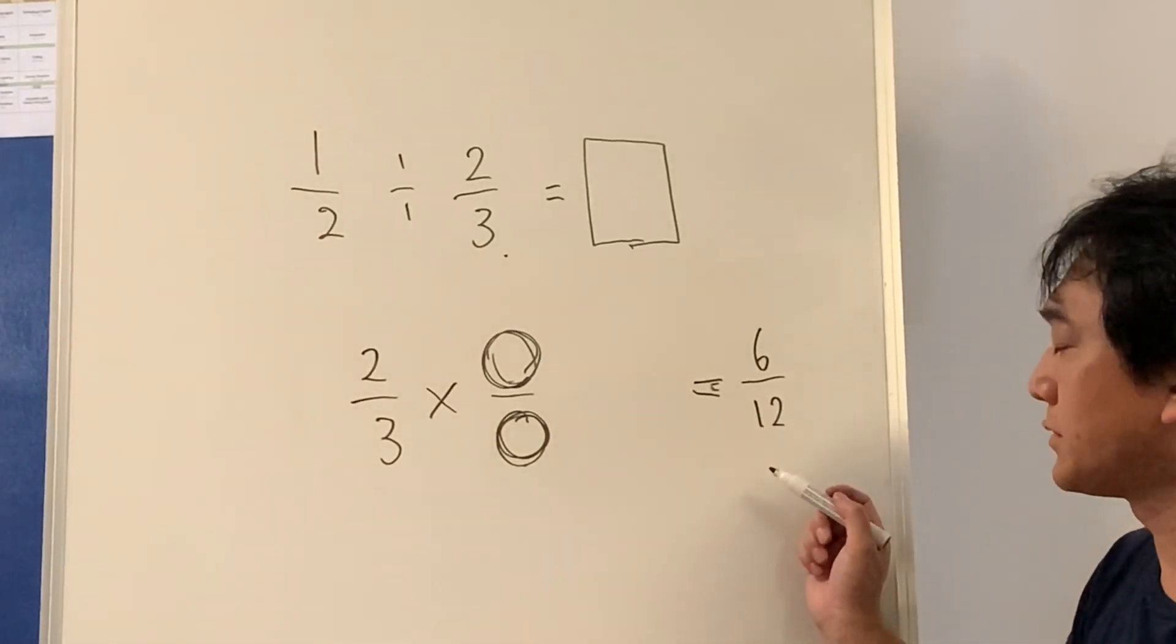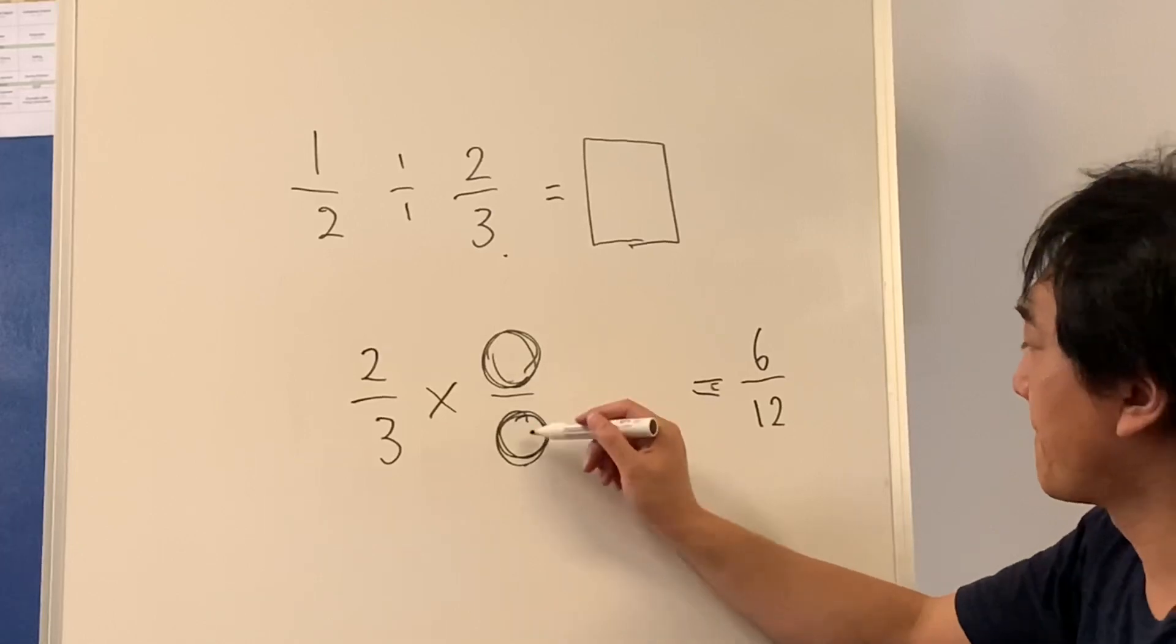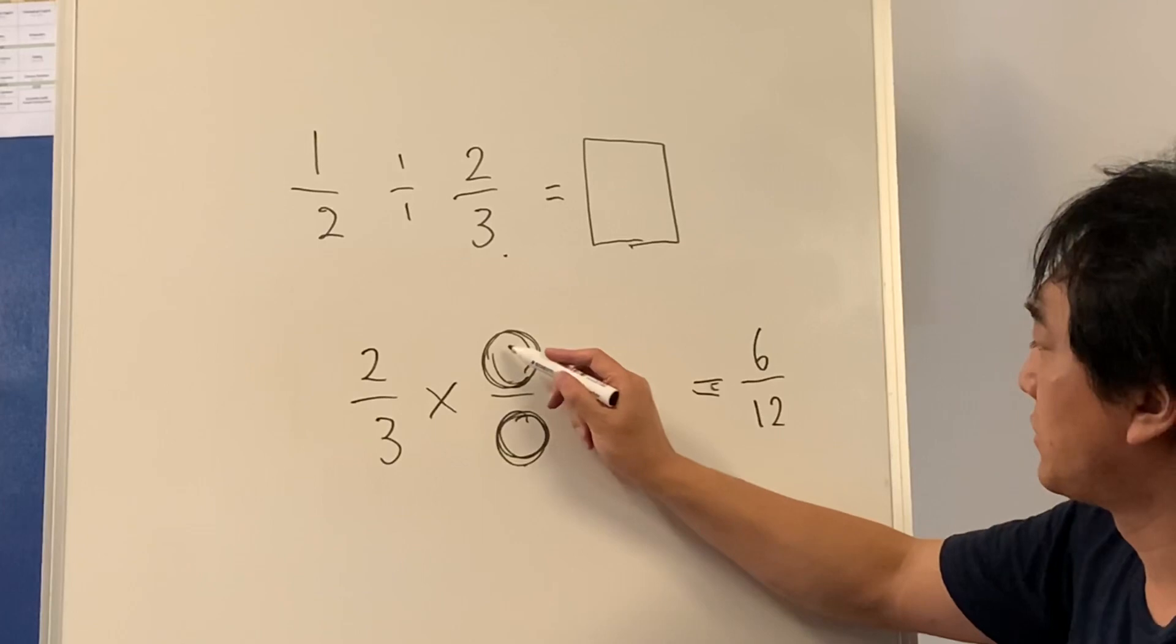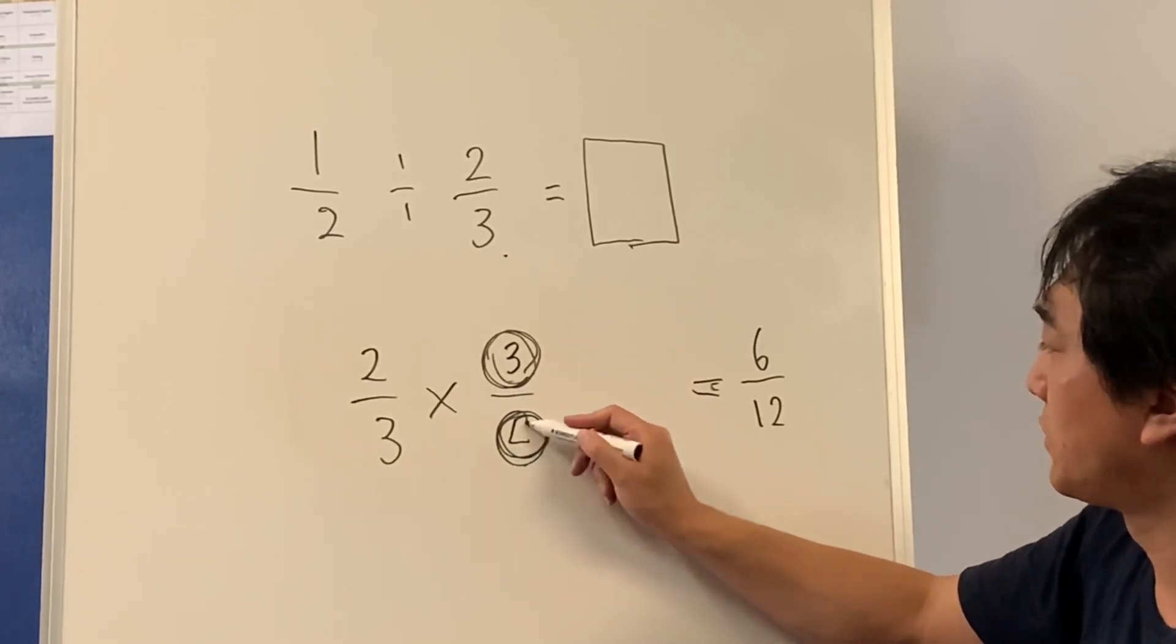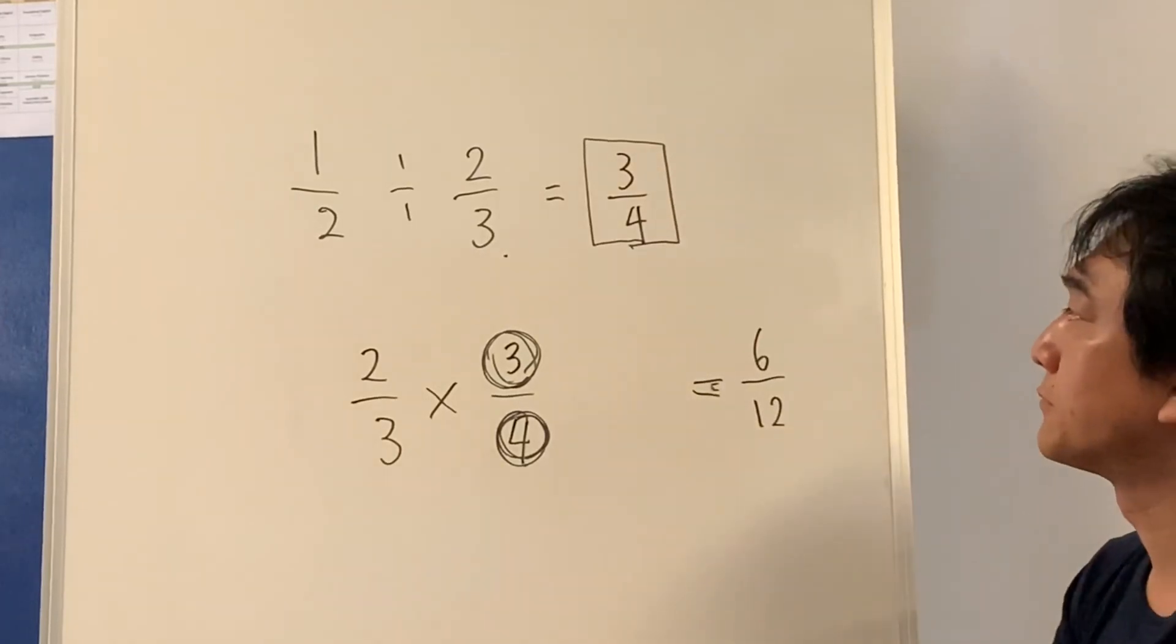To get six twelfths, the answer could be two, three, two, six, three, four, two, twelve. So three quarters is the answer. Right?